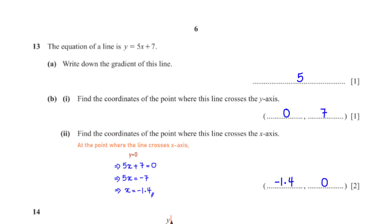The equation of the line is y = 5x + 7. Write down the gradient of this line. The line is expressed in the form y = mx + c, so the coefficient of x is the gradient, which is 5.